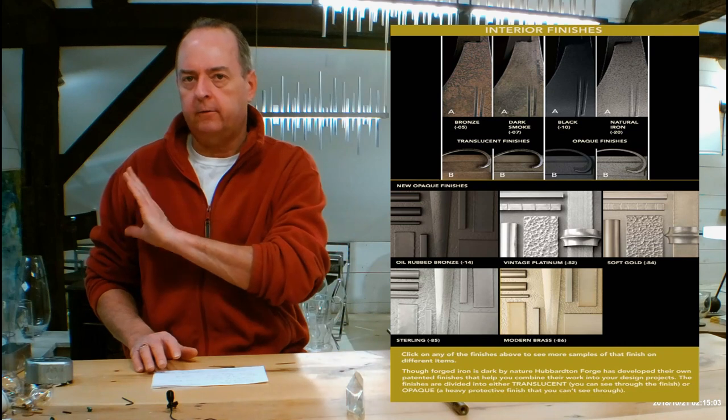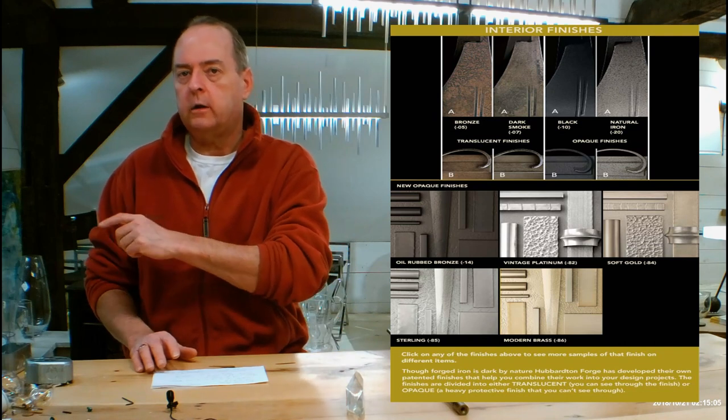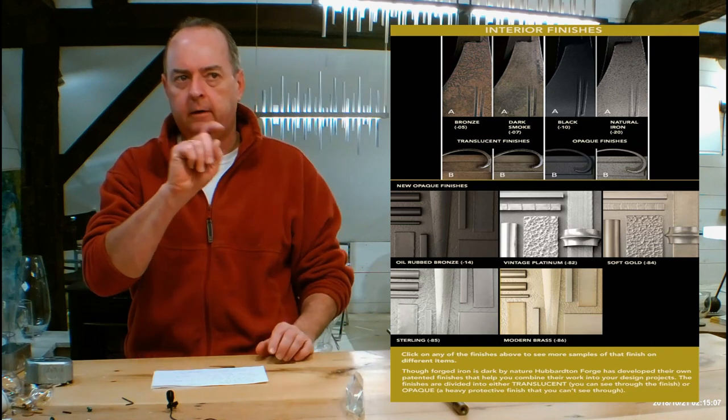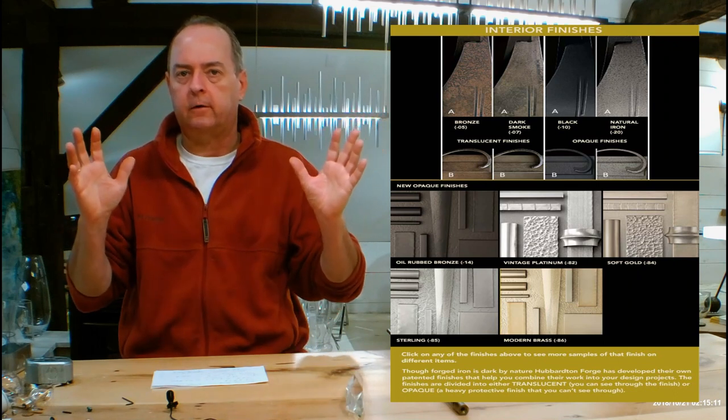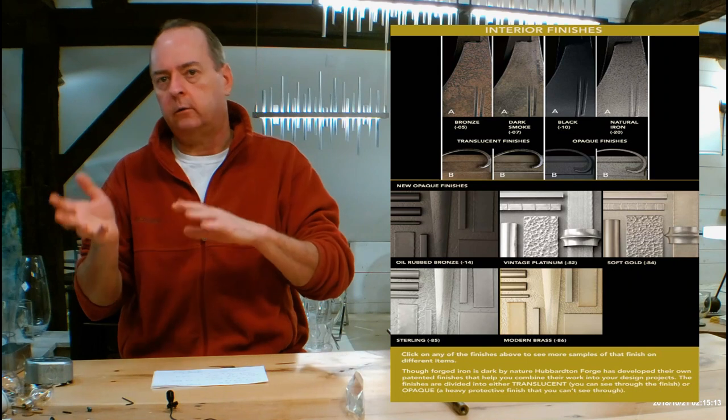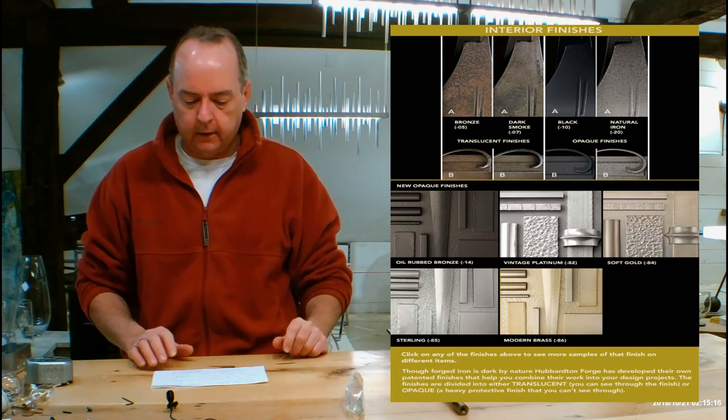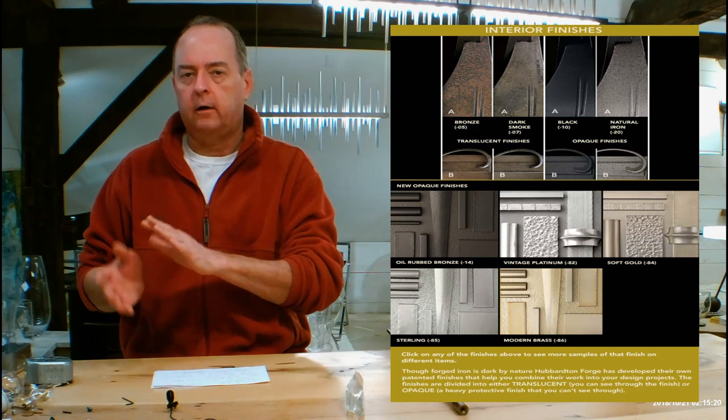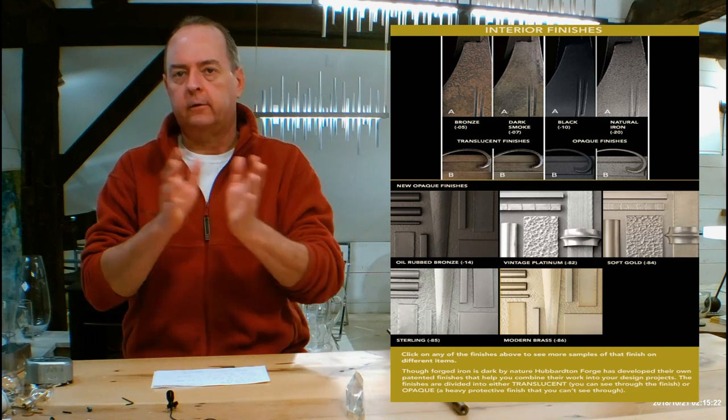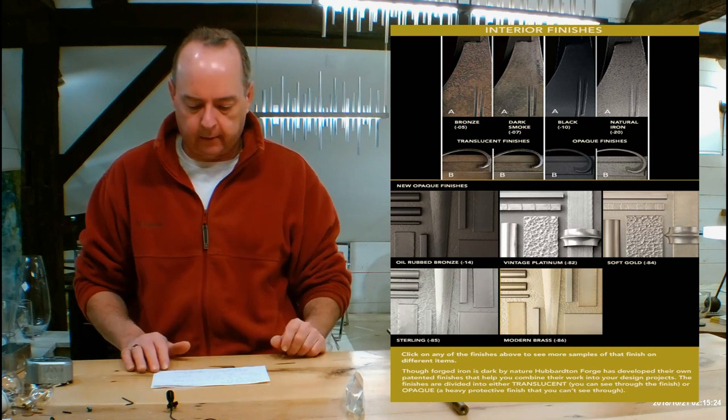So it's really important that you kind of watch the video, use the chart. You can click on that chart on different things, so you can click on dark smoke and a big page will pop up and show you lots of different things in dark smoke. Click on burnished steel or natural iron, it'll do the same thing. But it's really important that you understand how Hubberton Forge's finishes are kind of divided into translucent and opaque and how they can look on different fixtures.